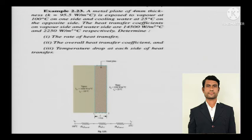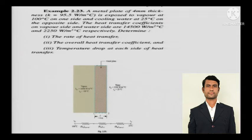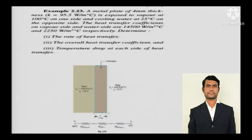A metal plate of 4 mm thickness with thermal conductivity k = 95.5 W/m·°C is exposed to vapor at 100°C on one side and cooling water at 25°C on the opposite side. The heat transfer coefficient on the vapor side is 14,500 W/m²·°C and on the water side is 2250 W/m²·°C. Determine: the rate of heat transfer, the overall heat transfer coefficient, and the temperature drop at each side.